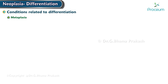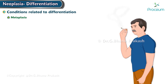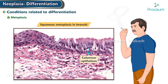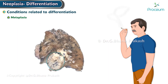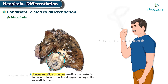For example, in response to chronic smoking, the normal columnar epithelium of the respiratory tract gets replaced by squamous epithelium, known as squamous metaplasia. Hence, squamous cell carcinoma of the lung is more common in smokers.